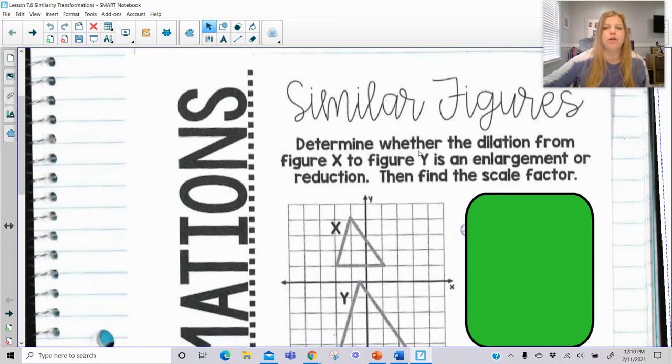When we have similar figures on the coordinate plane, we determine whether the dilation from figure X to figure Y is an enlargement or reduction, then find the scale factor. Dilation means that if the scale factor is greater than one, it's going to be an enlargement making the value larger. If the scale factor is a value that's less than one, it's going to make the figure smaller, which we call a reduction.